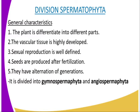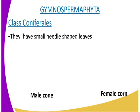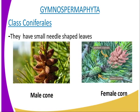This division Spermatophyta is divided into two: we have the Gymnosperms and the Angiosperms. The Gymnosperms have their own characteristics, with the first being the male cone and the female cone. The Gymnosperms are actually divided into three main classes: we have the Conifers, the Cycadales, and the Ginkgos.